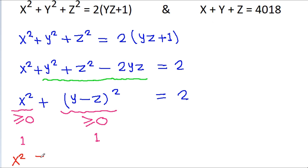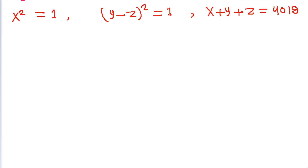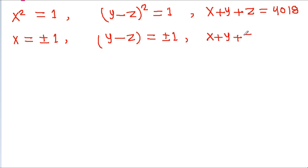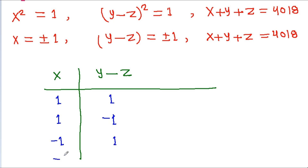So x² = 1 and (y - z)² = 1. Using x + y + z = 4018, we make a table: x and (y - z) can be (1, 1), (1, -1), (-1, 1), or (-1, -1).